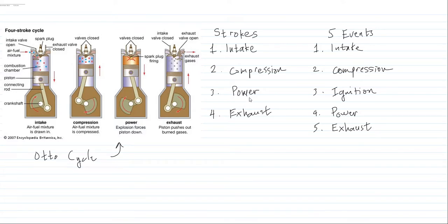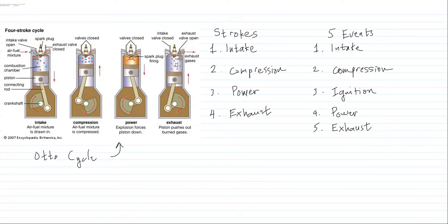Once the fuel and air mixture is fully burned, the next stroke is the exhaust stroke. During the exhaust stroke, the piston goes up, the exhaust valve opens, and it pushes out all the exhaust — all the burned fuel and air — out of the engine. Then the cycle repeats again.